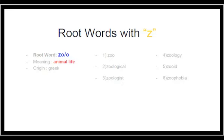The first root word which starts with Z is 'zoo' or 'zeo', which is a very familiar word. The meaning of this root is 'animal life'. So in whichever word we see 'zoo' or 'zeo', that means the word is related to animal life. Examples of such words are: zoo, zoological, zoologist, zoology, zoid, and zoophobia.